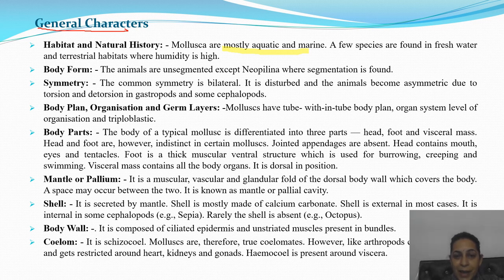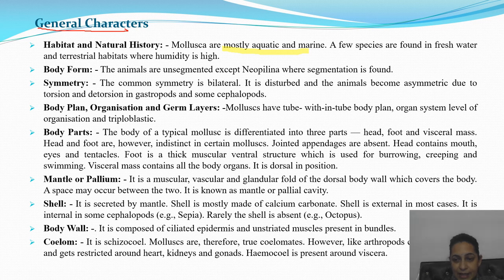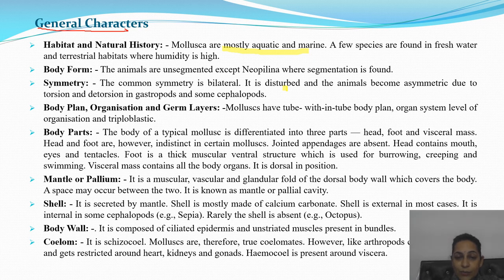Symmetry — they are bilateral. Bilateral means their left body is matched with the mirror image of the right body. However, this symmetry is disturbed and animals become asymmetric in most cases because of torsion. For example, in Pila globosa, an apple snail, if we see the body of the organism, it is distorted and there is no symmetry.